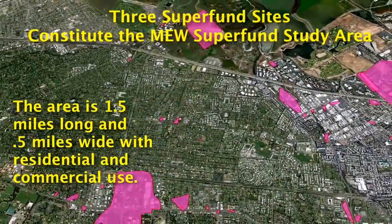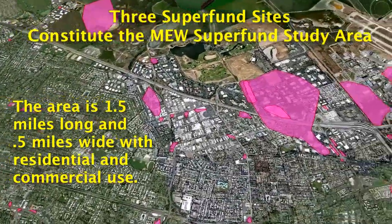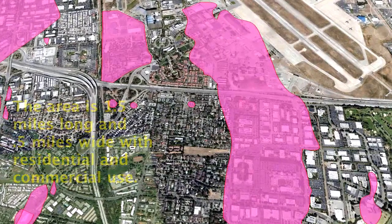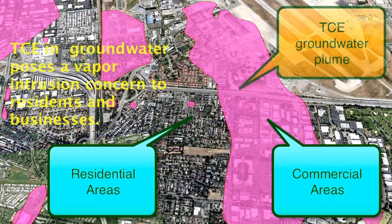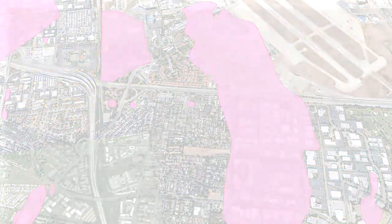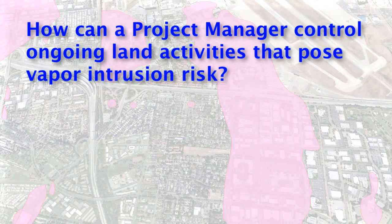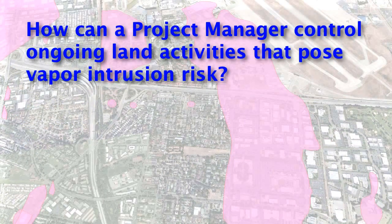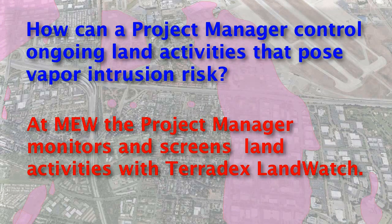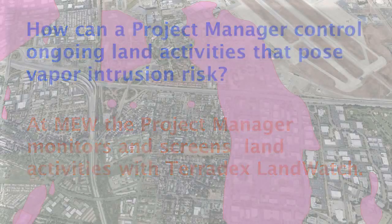For this discussion of information technology, we'll focus on the MEW Superfund study area. The study area is formed by an isoconcentration line of TCE, and the site affects residential and commercial areas. Our question is how a project manager can control land activities, and we focus on the use of Teradex information technology.